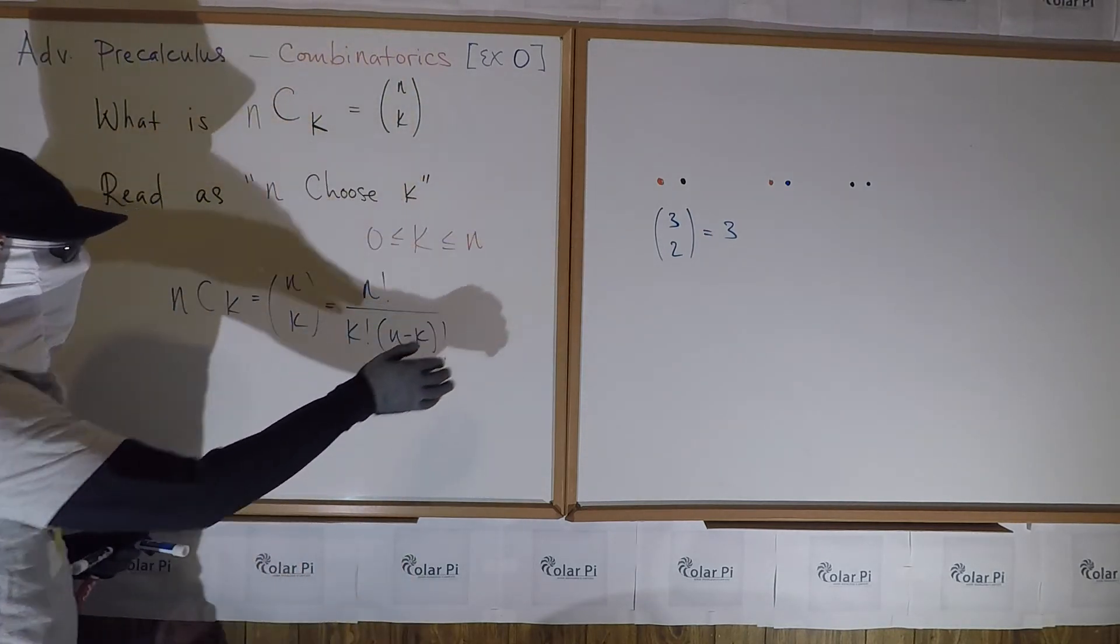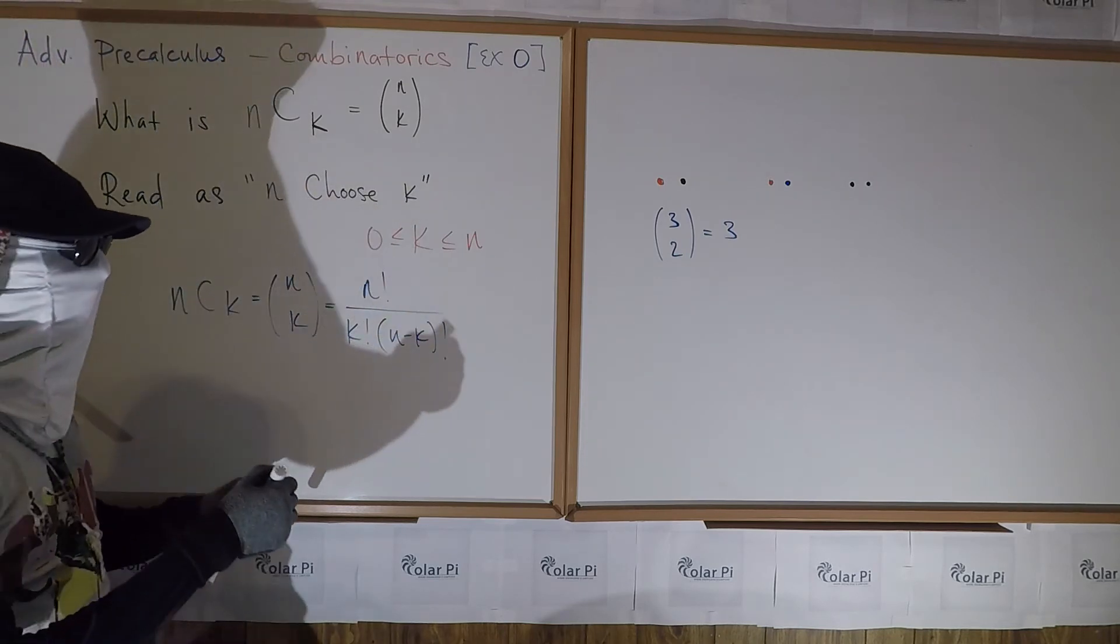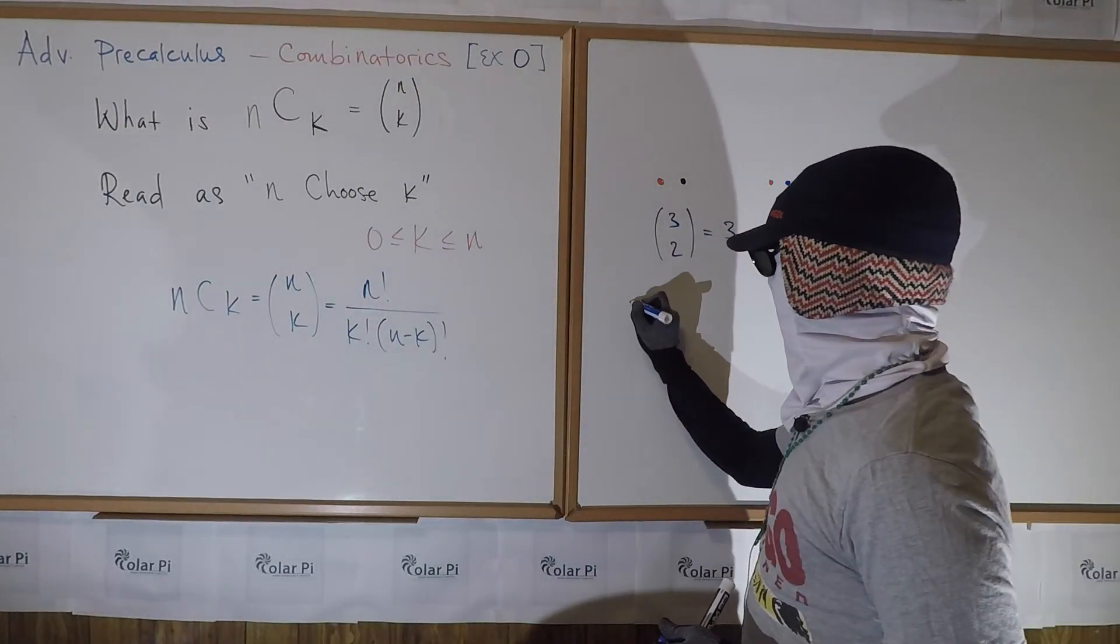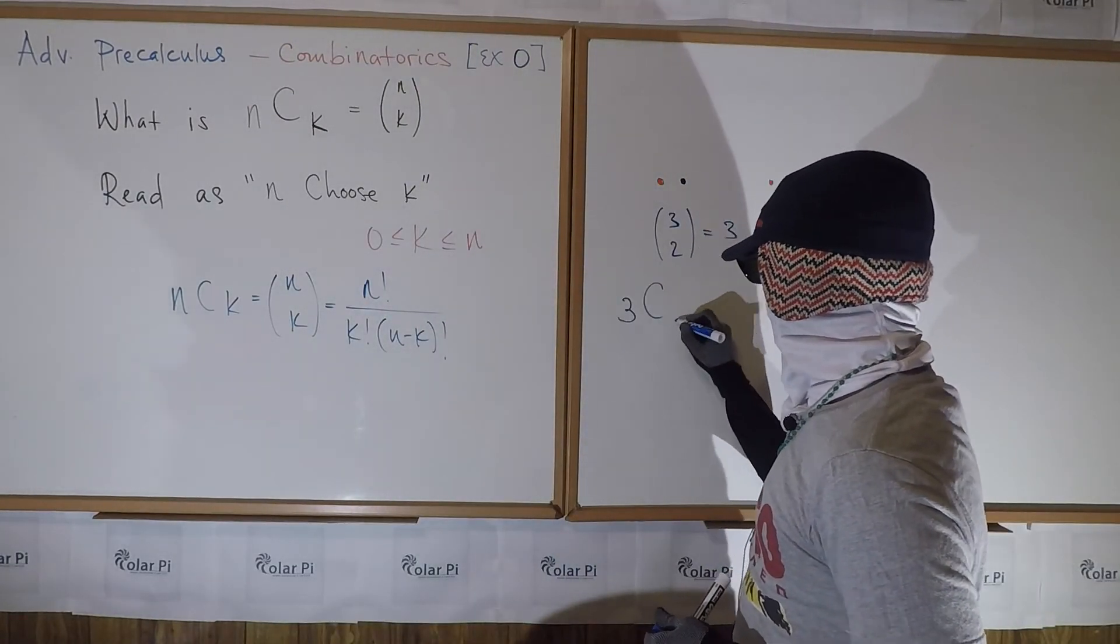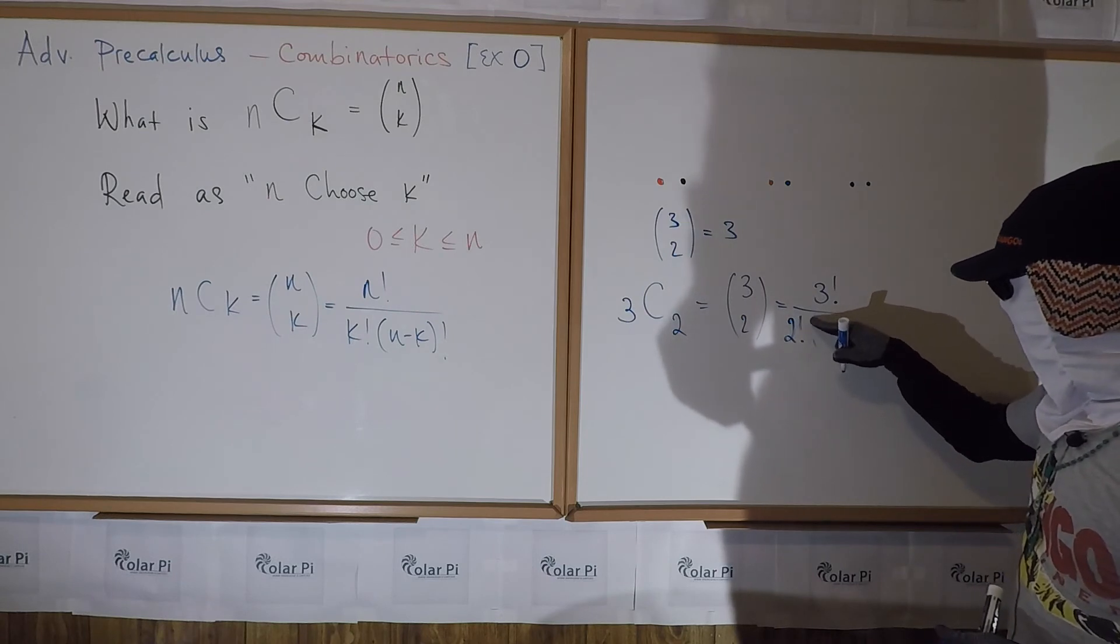Okay, now let's use the formula to see if in fact 3 choose 2 is 3 as we claim. So we'd write 3 choose 2, and the formula says n is 3, so that'd be 3 factorial, and then k is clearly 2, so divided by 2 factorial times (3 minus 2) factorial.